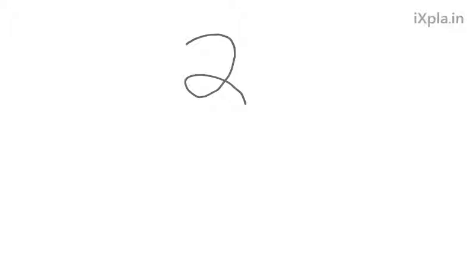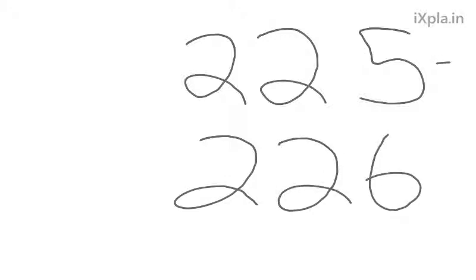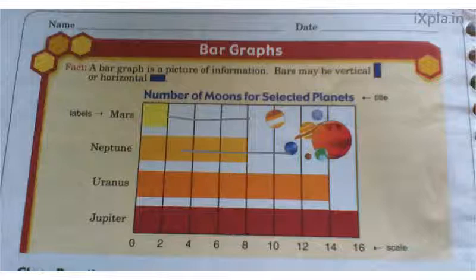Good morning. Today we're doing pages 225 and 226, and this is bar graphs — our introduction to what bar graphs are. At the top of the page it says a bar graph is a picture of information. Bars may be vertical or horizontal. The graph they're showing us here is a horizontal graph because the bars are going across this way.